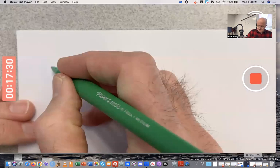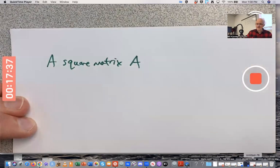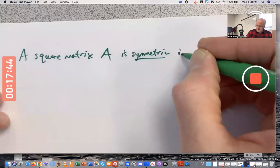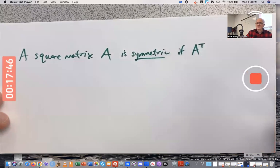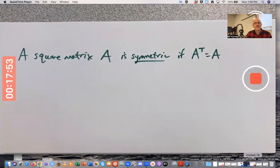First of all, what is a symmetric matrix? A square matrix A is symmetric if its transpose equals itself. That doesn't typically happen, right? Take a matrix A and make its transpose. It's not going to typically equal itself.